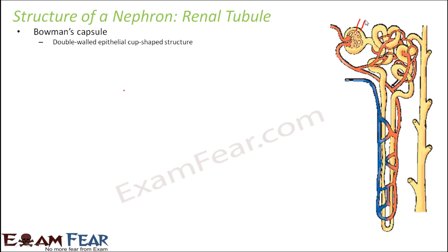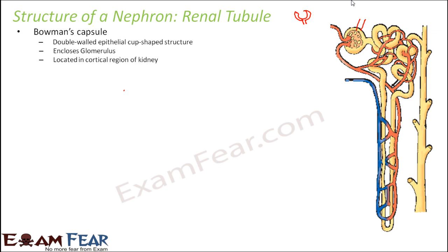You can see the two walls — this is one wall, this is another wall. It is made up of epithelial tissues and it is a cup-shaped structure. It encloses the glomerulus, so the glomerulus is present inside this. It is located in the cortical region of the kidney — the cortex. So both the glomerulus and the Bowman's capsule are present in the cortex.